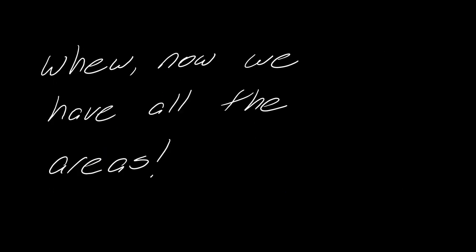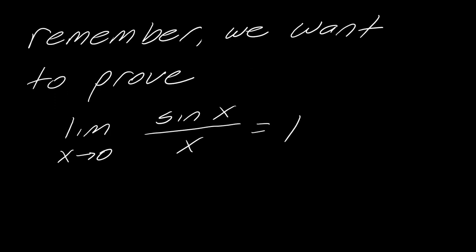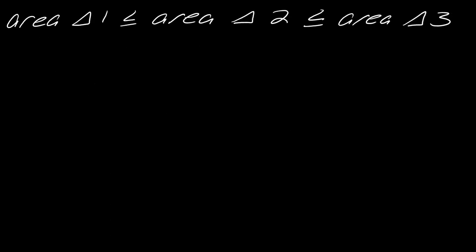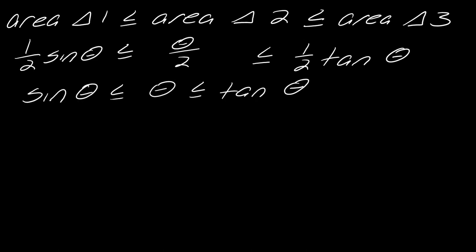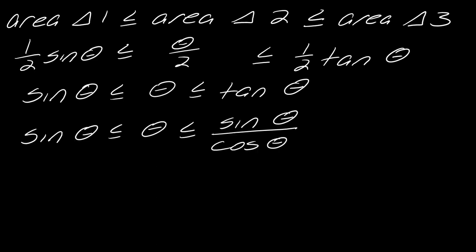Now we have all the areas. We know these three areas are related by an inequality: area of Triangle 1 ≤ area of Triangle 2 ≤ area of Triangle 3. Substituting the formulas: one half sine theta ≤ theta over 2 ≤ one half tangent theta. Since all terms have one half, I'll multiply everything by 2 to get: sine of theta ≤ theta ≤ tangent of theta. I can restate tangent of theta as sine of theta over cosine of theta.